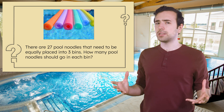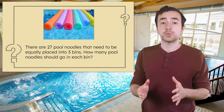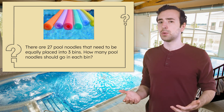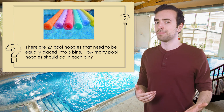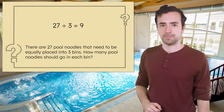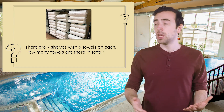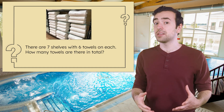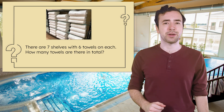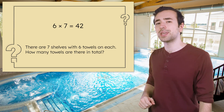For the first problem, 27 pool noodles being placed in three bins means we have a total amount being split into equal groups. By dividing: 27 divided by 3 equals 9 pool noodles per bin. For the next problem, there are seven shelves with six towels on each — should we divide or multiply? We need to figure out the total, so multiplication will work here. 6 times 7 equals 42 towels in total. And look at that — we unlocked the net! Excellent. We have the key to the next door and I didn't have to get all wet to get it.